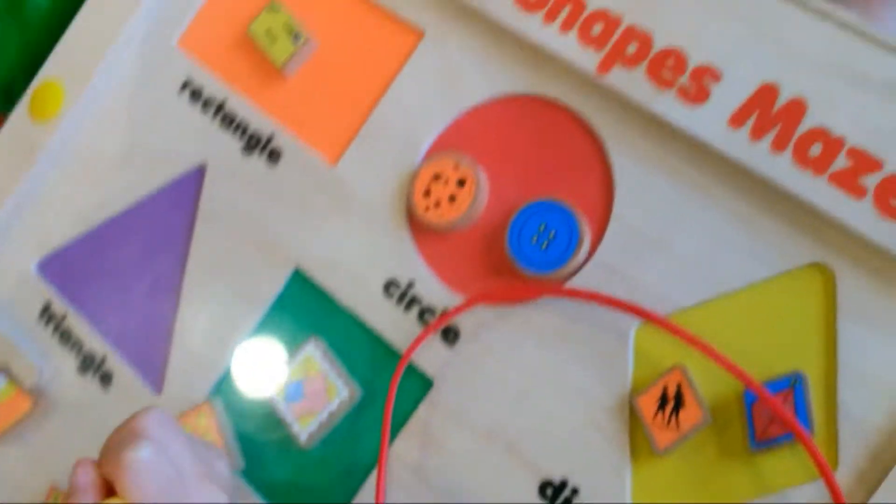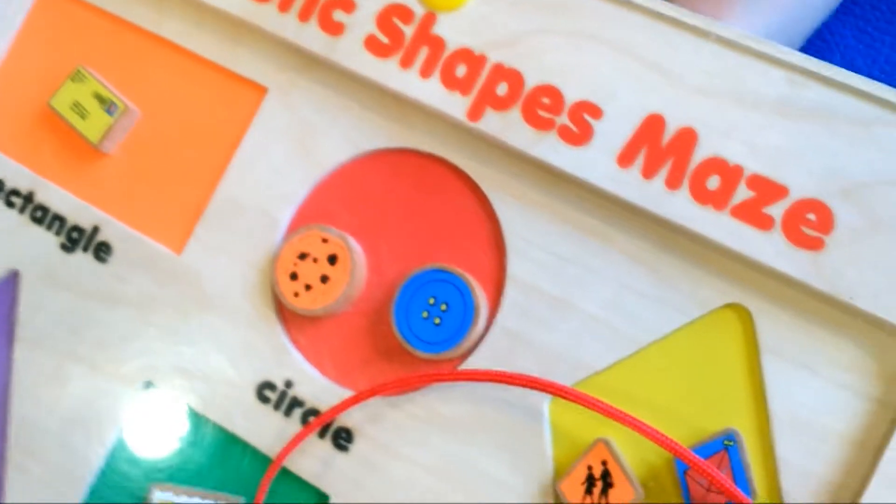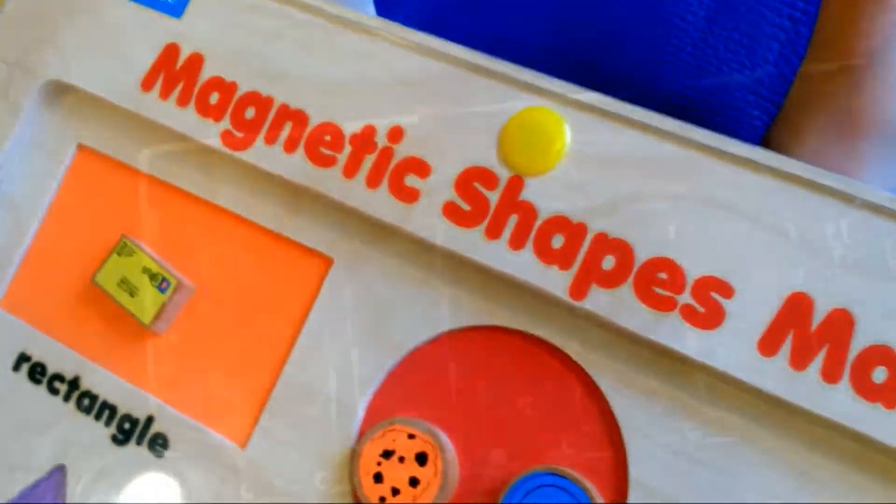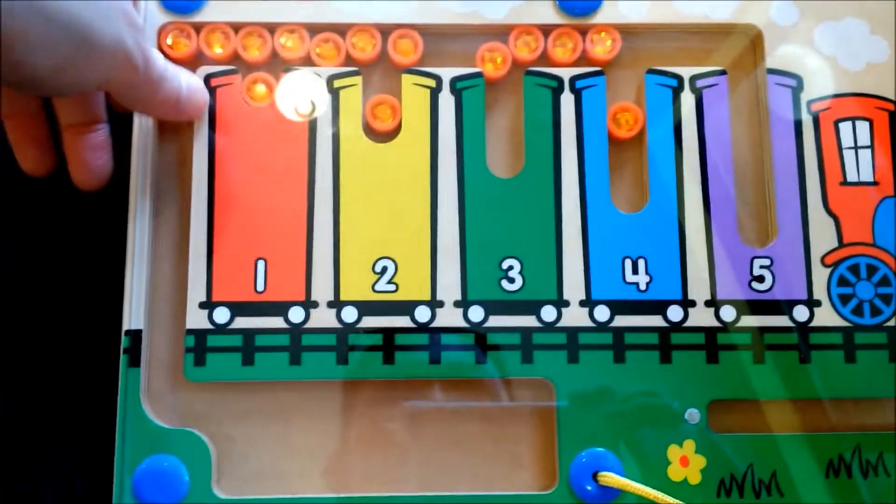What are you doing? My little girl's learning Magnetic Shapes Maze by Lakeshore. And this Lakeshore also has counting.